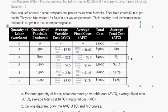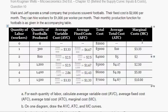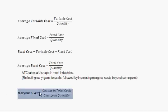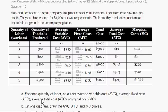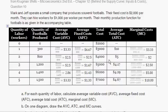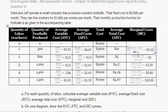The next question is: what's the marginal cost? Marginal cost equals the change in total cost divided by the change in quantity produced. For the first level of 300 footballs, the change in total cost is $3,000 minus $2,000, divided by 300 minus zero, giving $1,000 divided by 300, which equals $3.33 marginal cost.